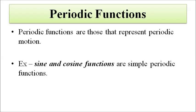The periodic motion of any object, particle, or body has to be represented in mathematical terms with the help of periodic functions. The main ways in which periodic motion is represented mathematically is with the help of sine and cosine functions. These are very popular because they are simple to analyze and we are well acquainted with their behavior, so they are chosen as the standard mathematical representation of periodic motion.